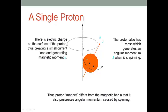However, this magnet is different from the magnet bar in our daily life because it's not just a magnet. It also possesses angular momentum caused by the spinning. So this is totally different from a static magnet. You can say this is a moving, spinning magnet. So we can use these two properties for MR imaging. Let's see what's happening.